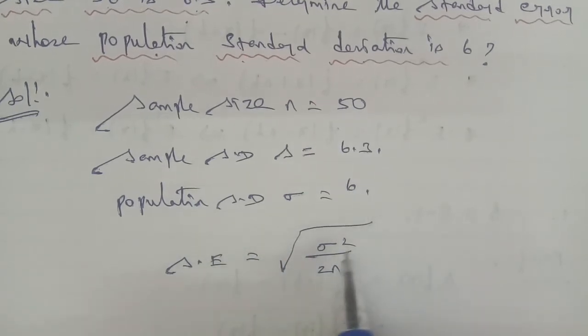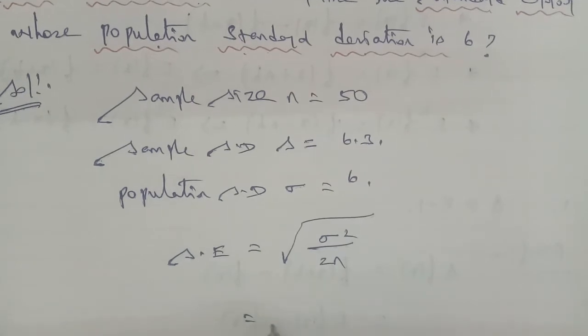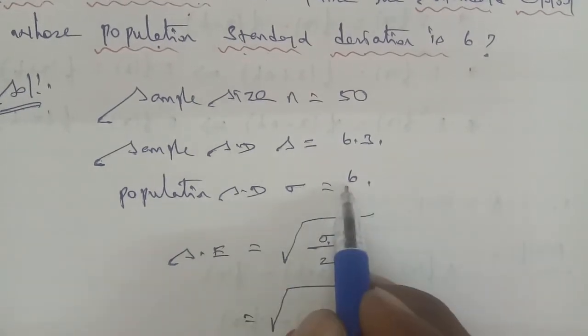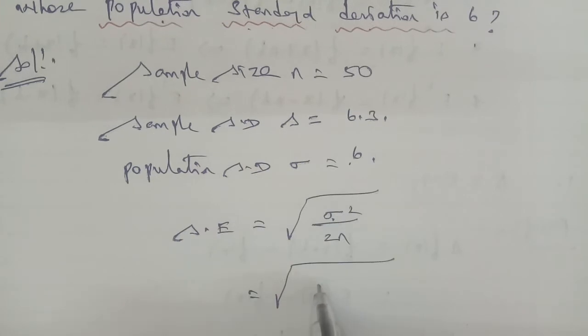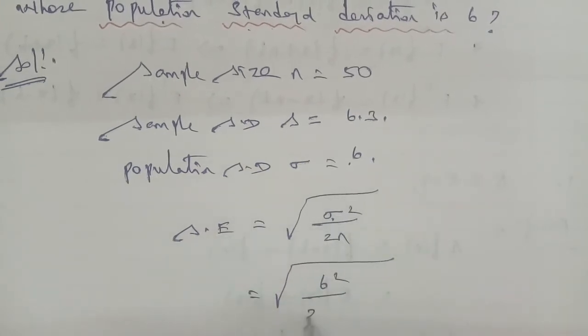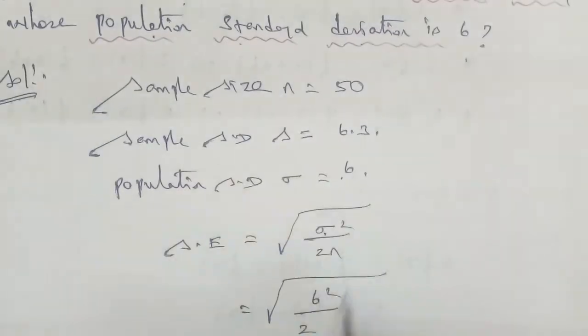Standard error equals square root of sigma squared by 2n. So, equal to square root of sigma value. Sigma value is 6, so apply 6 squared by 2n. So 2 into n value is 50.